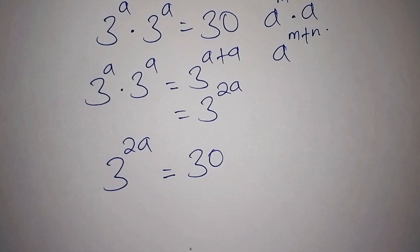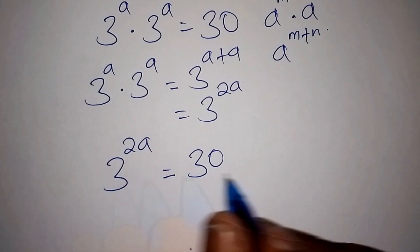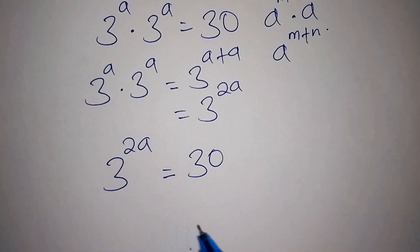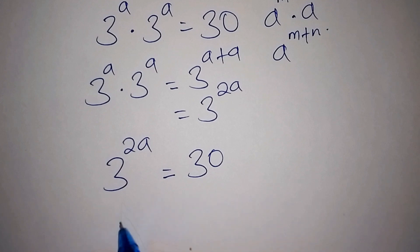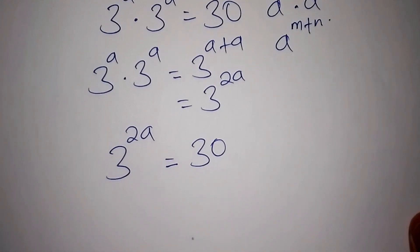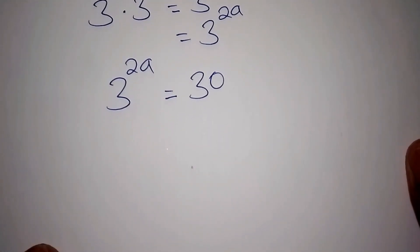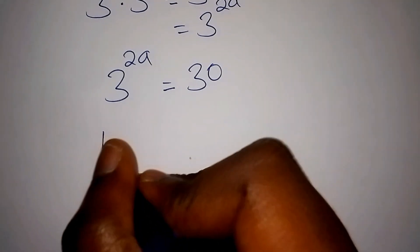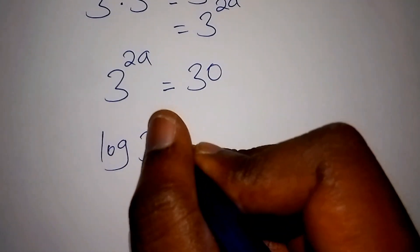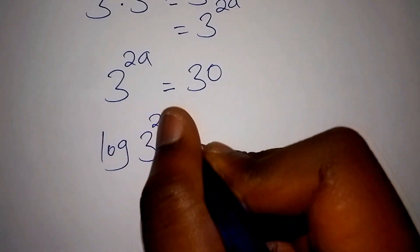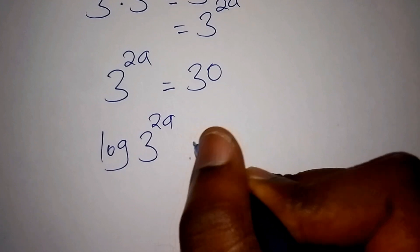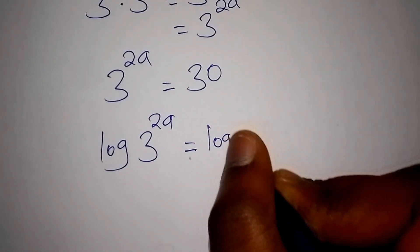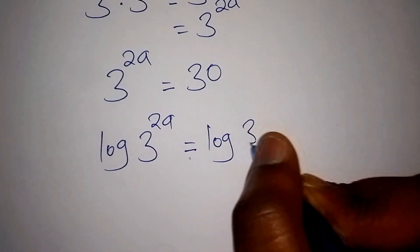How do we now work out the value for A? The best approach is to introduce the log on both sides. We shall have log of 3 to the power of 2A equals log of 30.